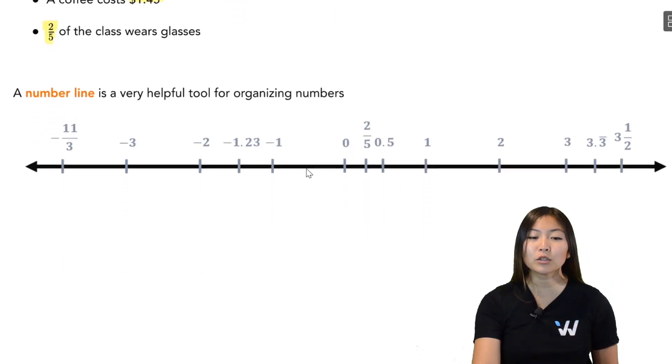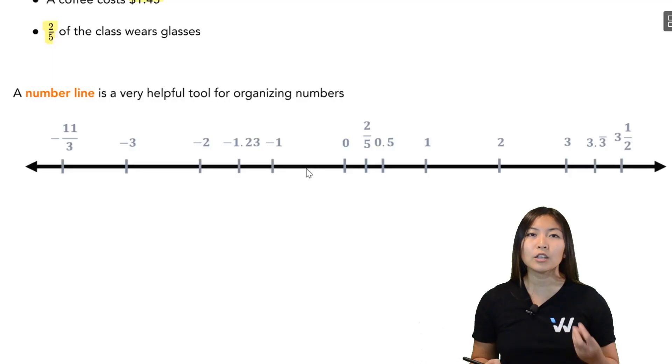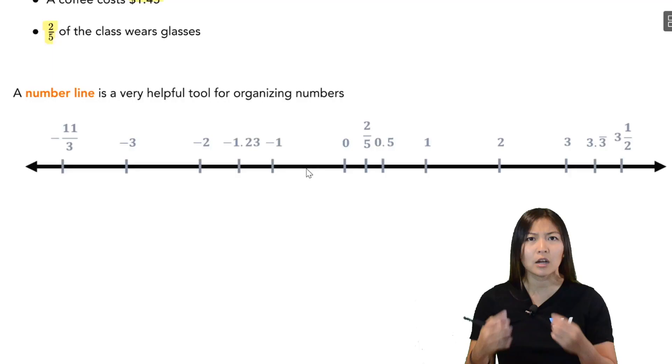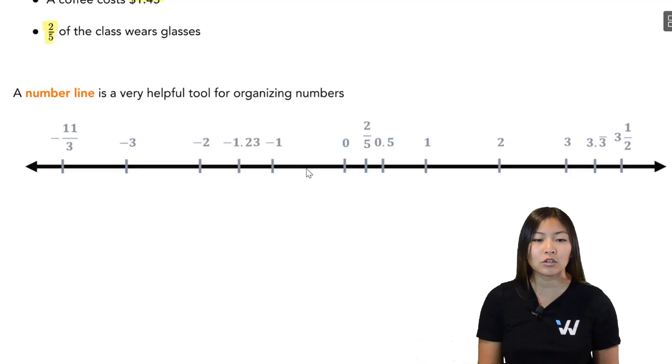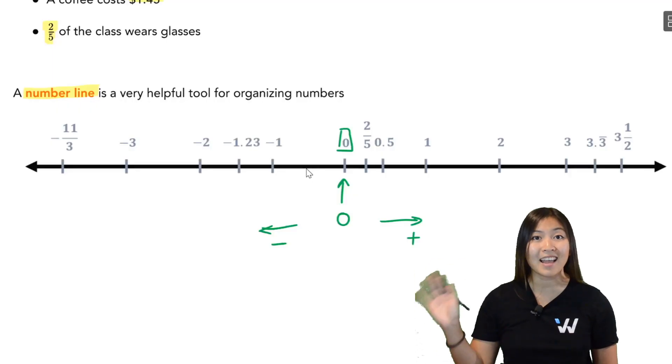Now, since numbers represent quantities, that means that some numbers could be bigger than others, and some numbers are smaller than others. So a really useful way for us to represent which numbers are bigger, which ones are smaller, kind of the order of numbers, is using a number line such as this one. So right in the middle of the number line, smack in the middle, that's your zero. And then everything to the right of the number line, those are positives. Everything to the left of the number line, those are negatives.